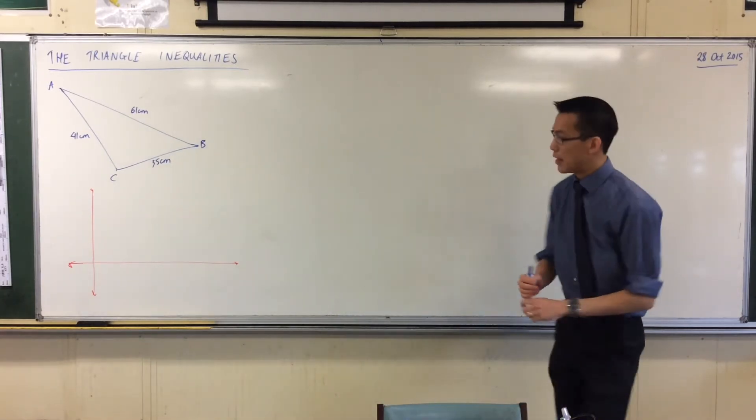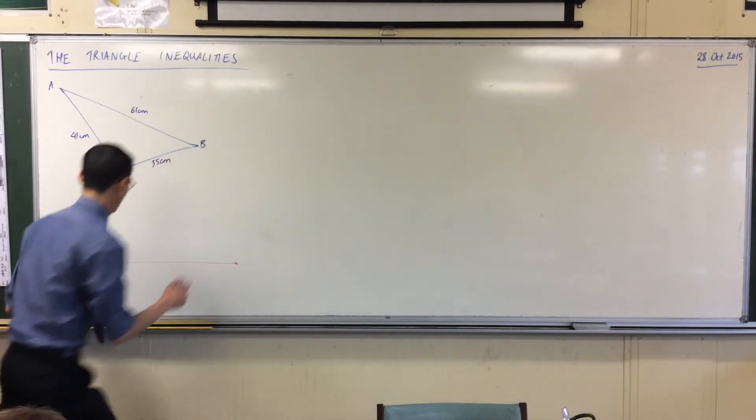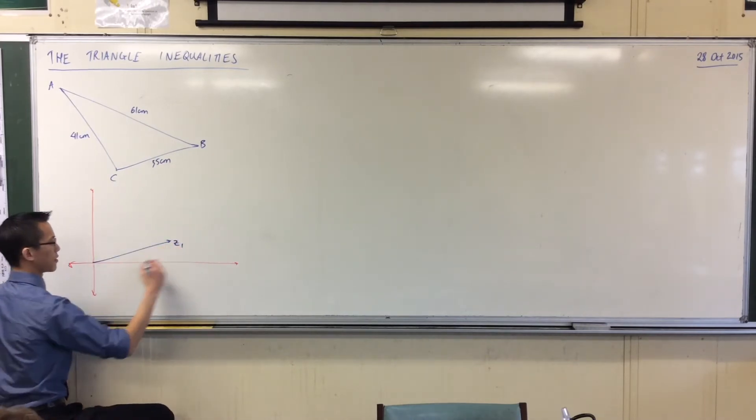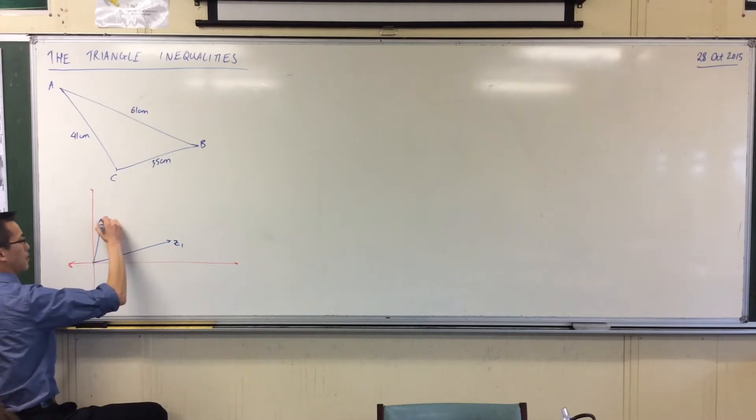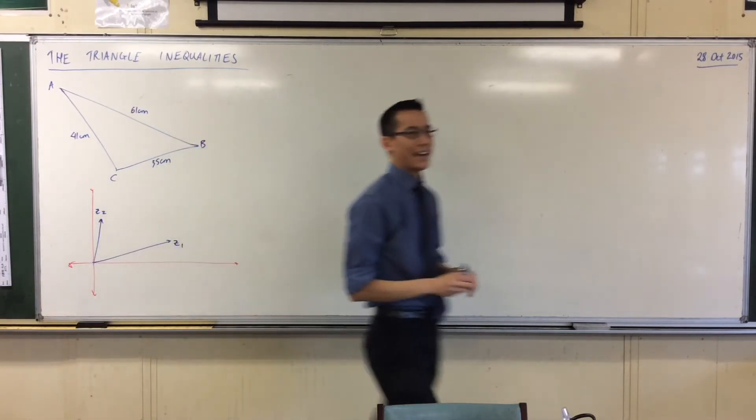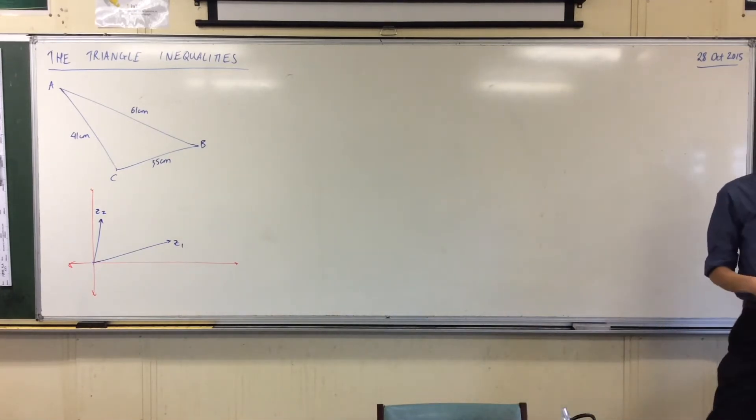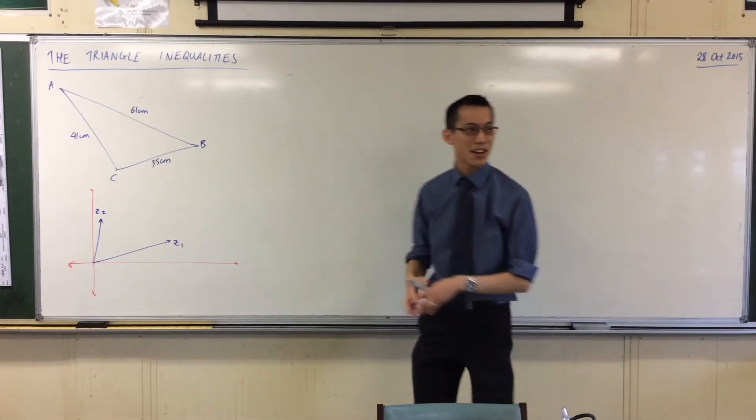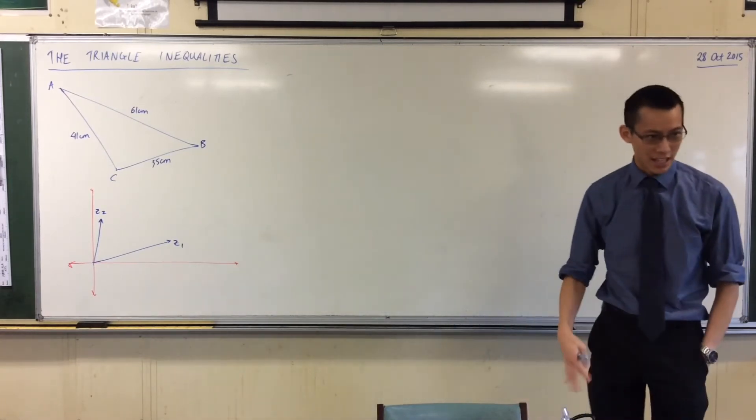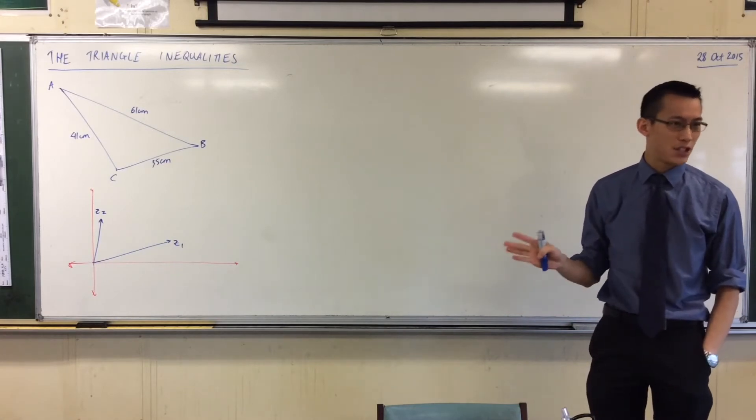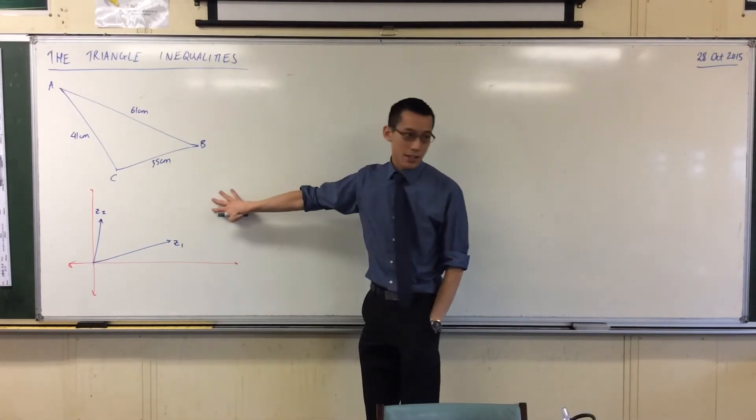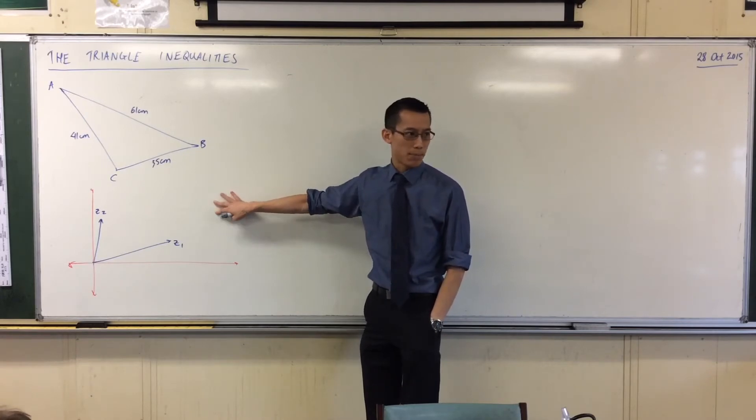Triangles pop up everywhere when you think about complex numbers and how they relate to each other. In fact, there are already some very obvious relationships that we can have a look at which will take advantage of this. So, keeping that guy on the board, let's draw ourselves a complex plane. And let's pop a z1 and z2 on here.